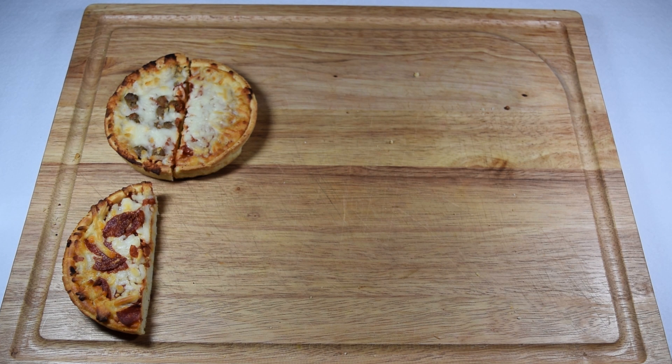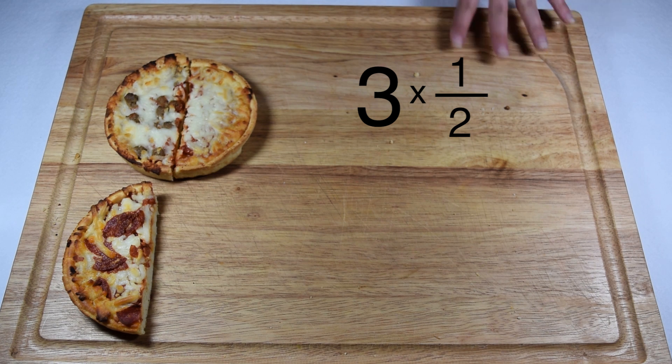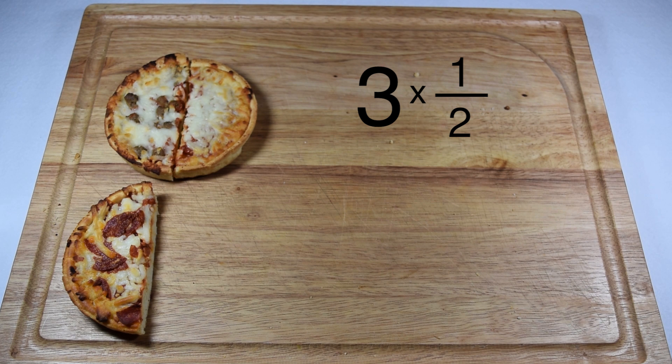Another option would be to multiply three times one half, because we have three pieces worth one half each. To multiply three times one half, we know that we need to multiply numerator times numerator and denominator times denominator. The problem is three is a whole number and doesn't have a numerator and denominator. So the first thing we need to do is change three into a fraction.